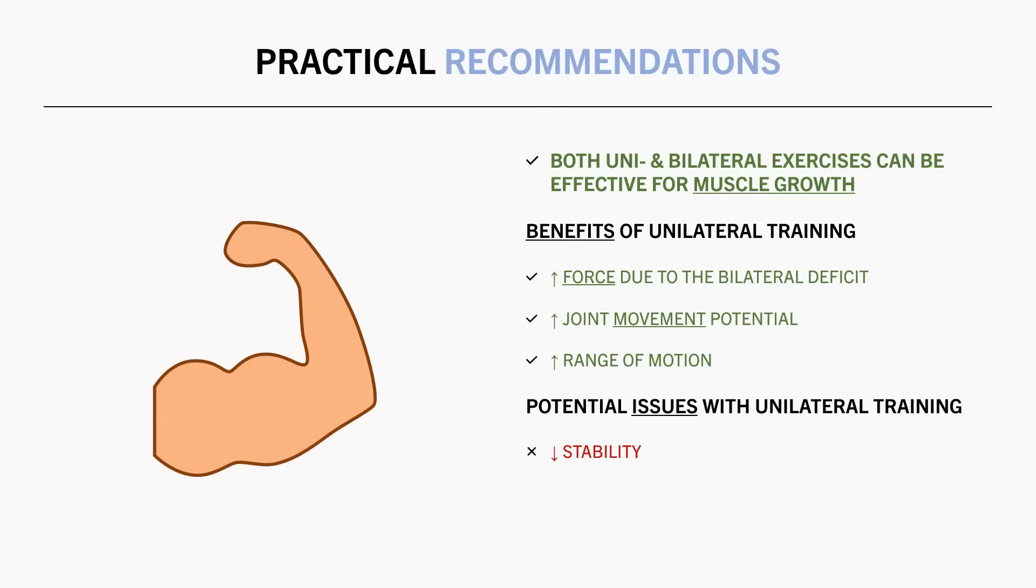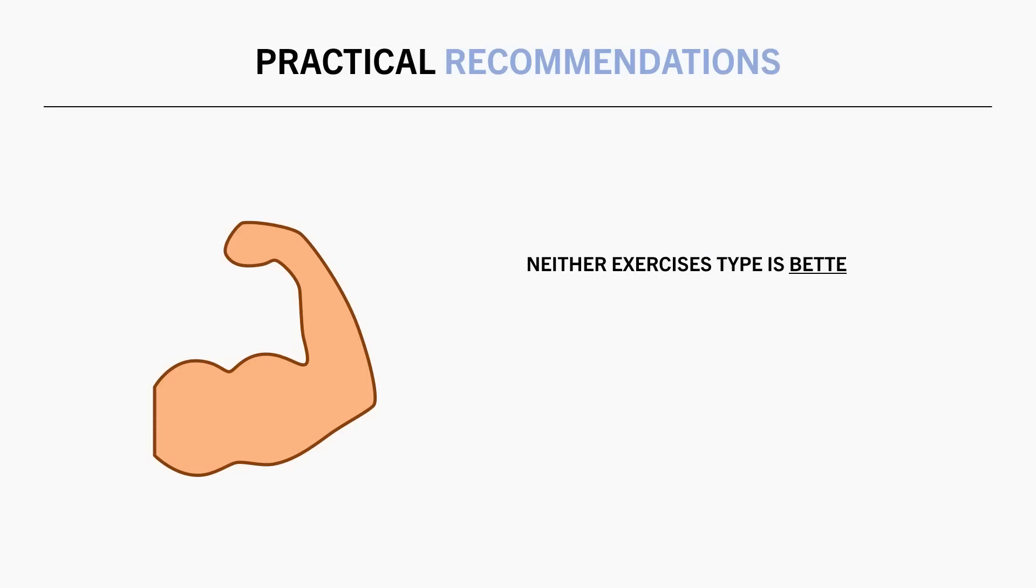However unilateral training also has some potential downsides too. First is that some unilateral exercises compromise stability which may reduce our potential force output. Furthermore there is usually a small crossover fatigue effect which may diminish performance of the opposite limb to a small extent. And the biggest practical issue with unilateral training is that it can significantly reduce the time efficiency of your workouts. So overall neither of these exercise types seems to be inherently better than the other in all cases. Rather the inclusion of either exercise type comes down to the individual exercise we are referring to and the context of the entire workout plan.